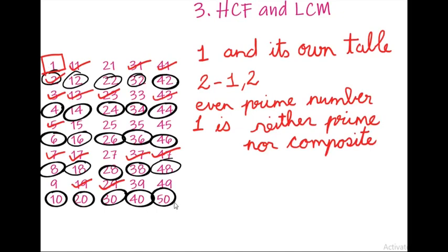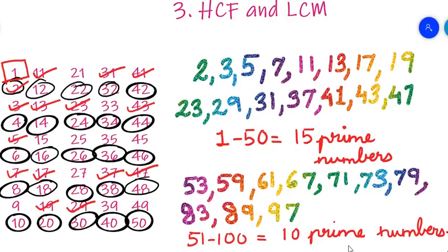Now I will give you the list of prime numbers from 1 to 50 and 51 to 100. From 1 to 50 we have 15 prime numbers, and from 51 to 100 we have 10 prime numbers, giving us a total of 25 prime numbers from 1 to 100. The prime numbers are: 2, 3, 5, 7, 11, 13, 17, 19, 23, 29, 31, 37, 41, 43, 47, 53, 59, 61, 67, 71, 73, 79, 83, 89, 97.